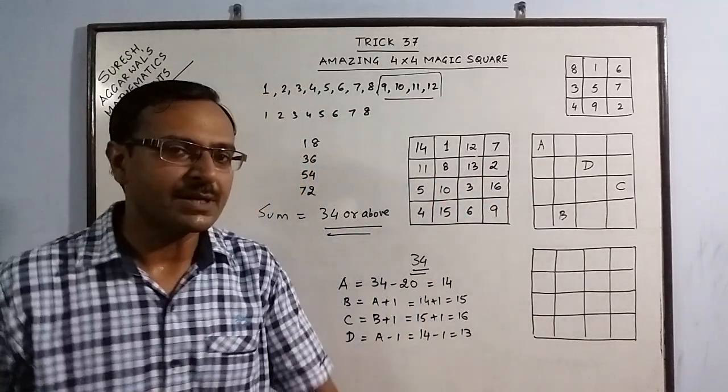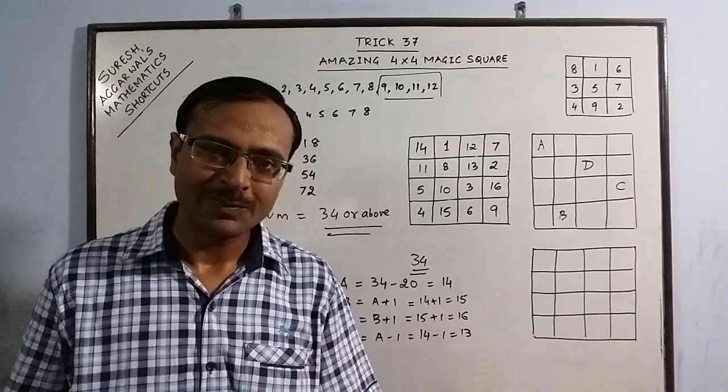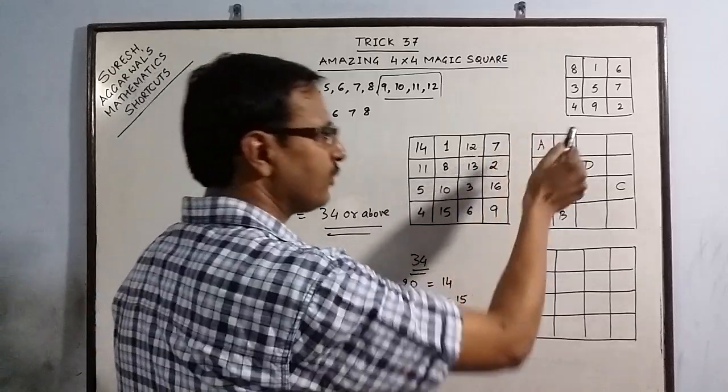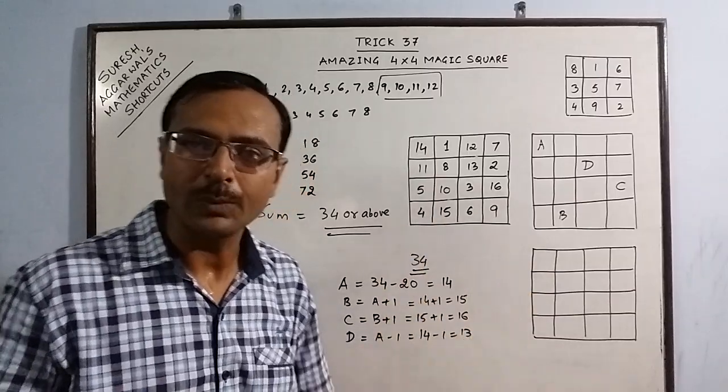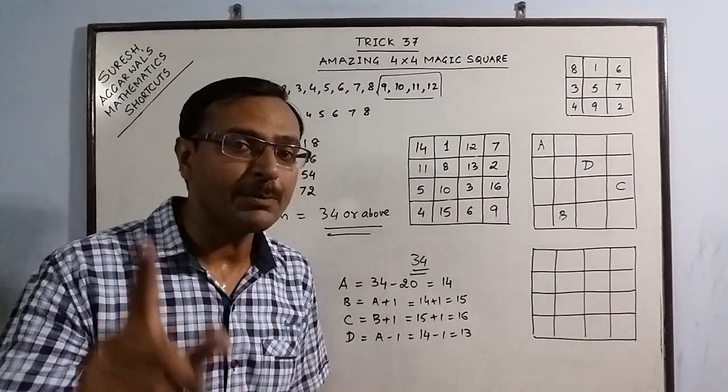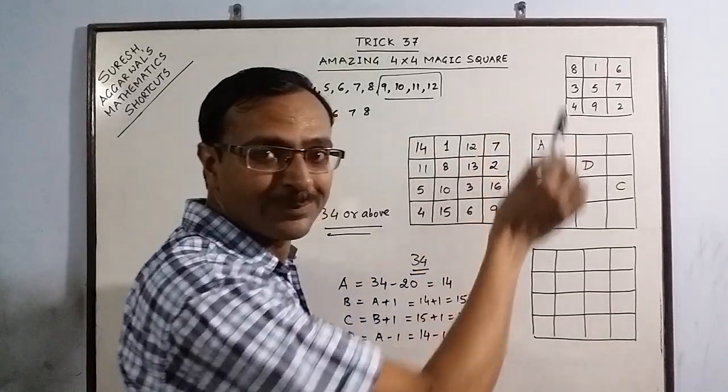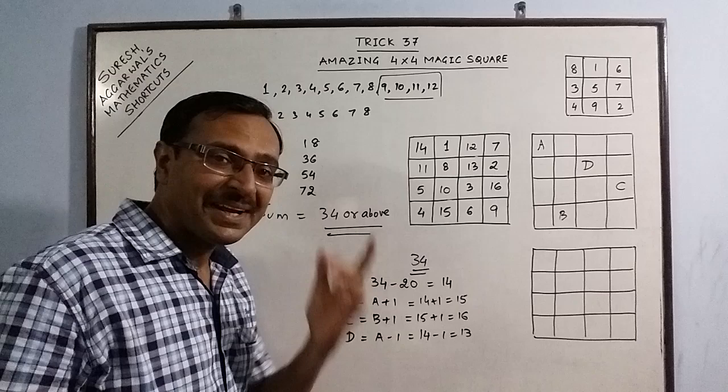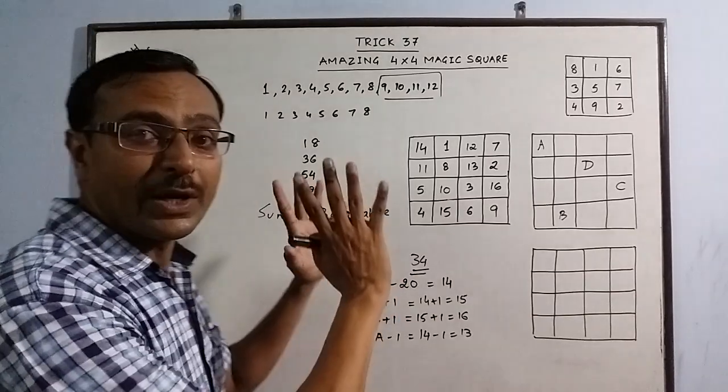Now, you see, the process is complete and this magic square will give you a sum of 34 in all rows like 14 plus 1, 15, 15 plus 12, 27 plus 7, 34. 11 plus 8 is 19, 19 plus 13, 32 plus 2, 34 and so on. You will get 34 in each row. Now, 34 in each column also, you can verify. Simultaneously, you have a sum of 34 diagonally also. See, 4 plus 10 is 14, 14 plus 13 is 27, 27 plus 7 is 34. 14 plus 8 is 22, 22 plus 3 is 25, 25 plus 9 is again 34.